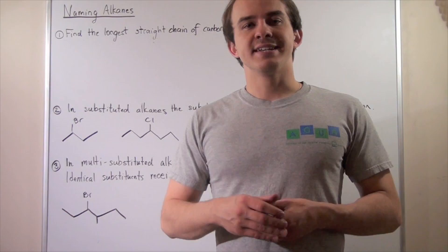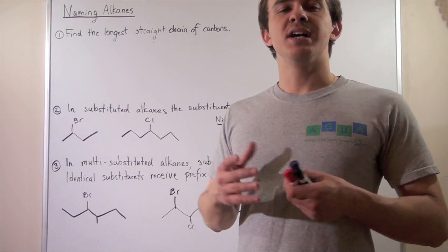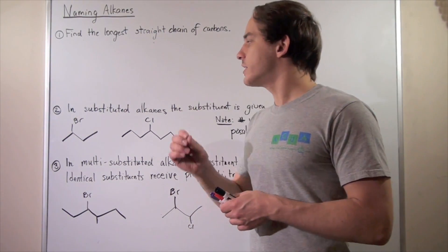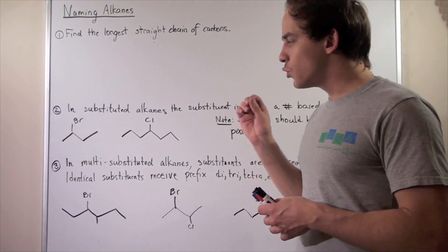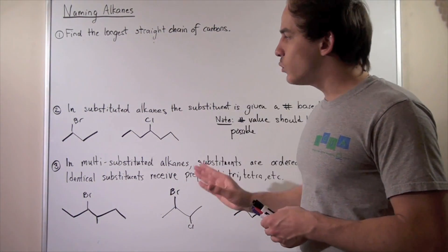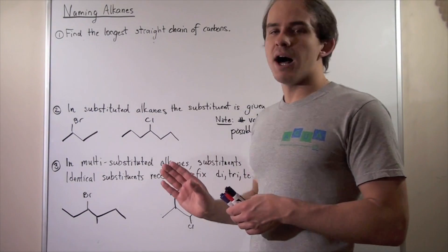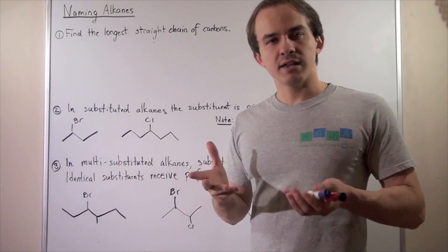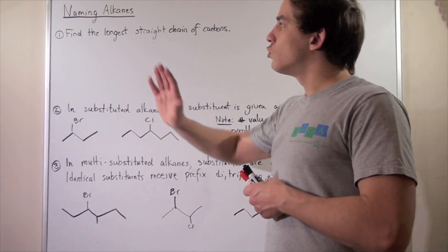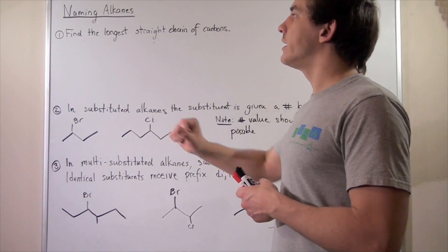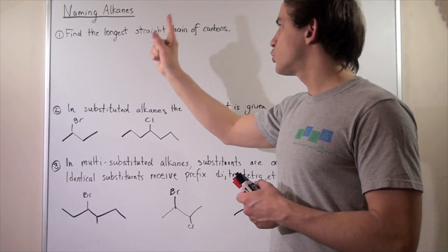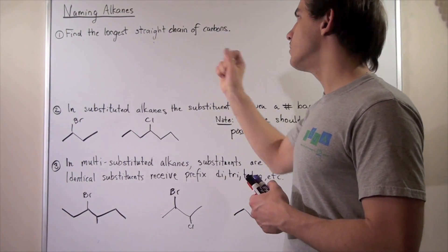Naming alkanes can sometimes be complicated. Let's look at a few important rules we have to keep in mind whenever we're naming alkanes. Rule number one: find the longest straight chain of carbons.